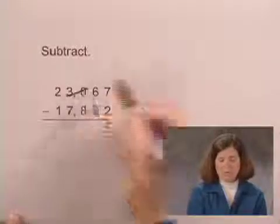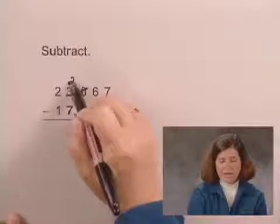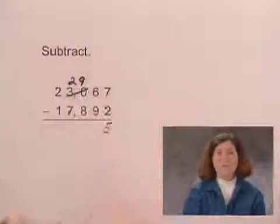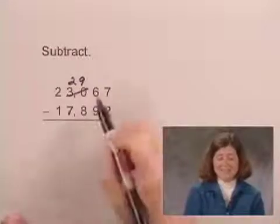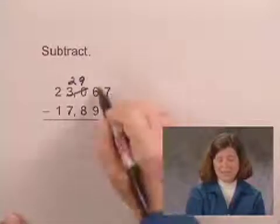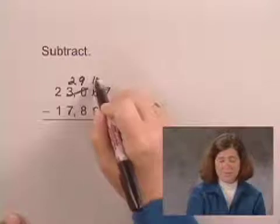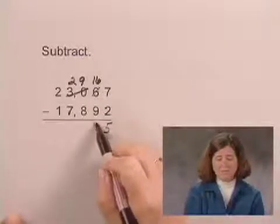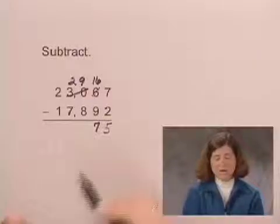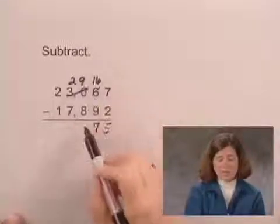Borrowing 1 hundred from 30 hundreds gives us 29 hundreds plus 1 extra hundred. That 1 extra hundred we'll rename as 10 tens. 10 tens plus the 6 tens here gives us 16. Now 16 minus 9 is 7. Moving to the 100s column, 9 minus 8 is 1.